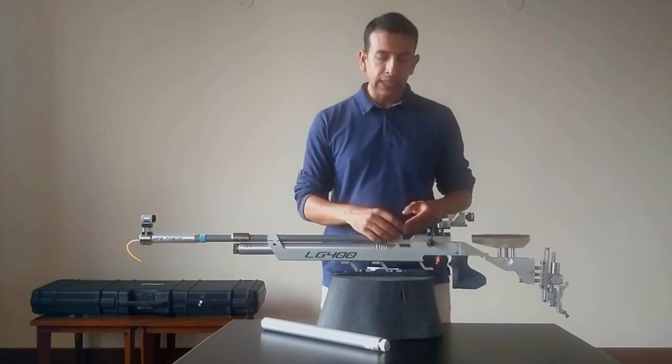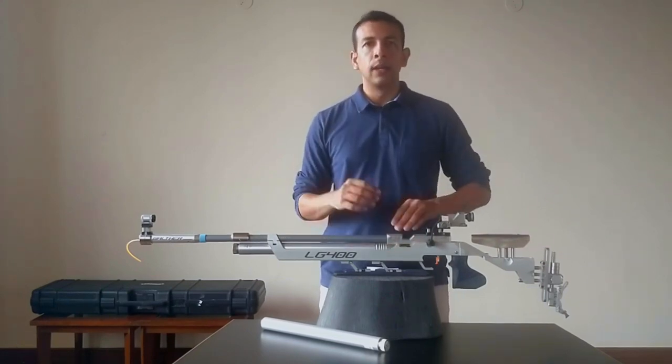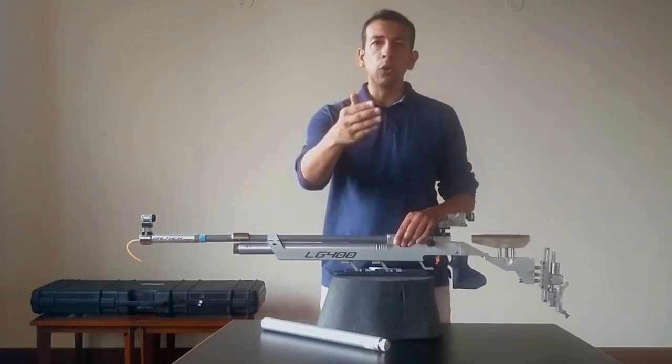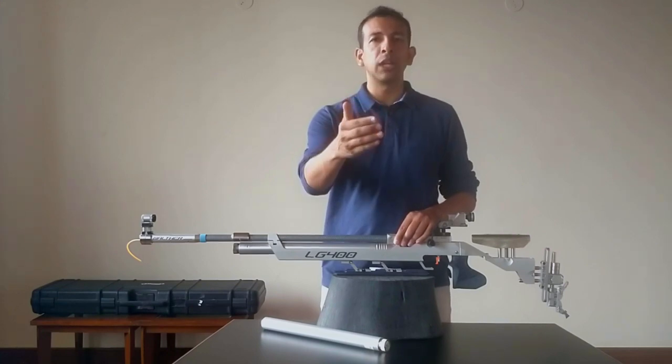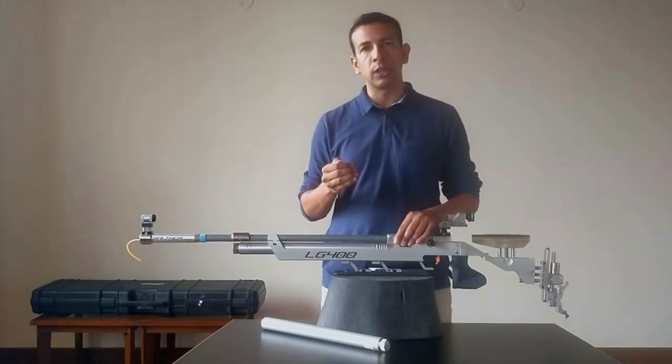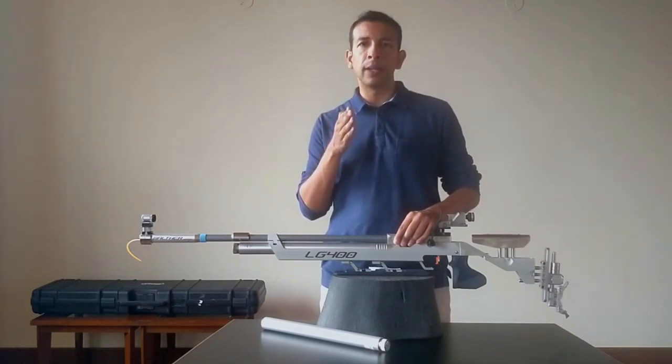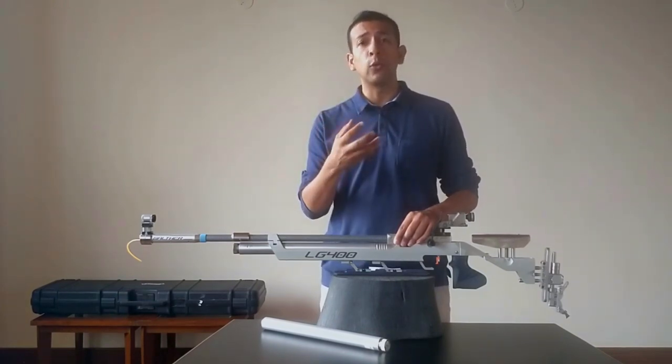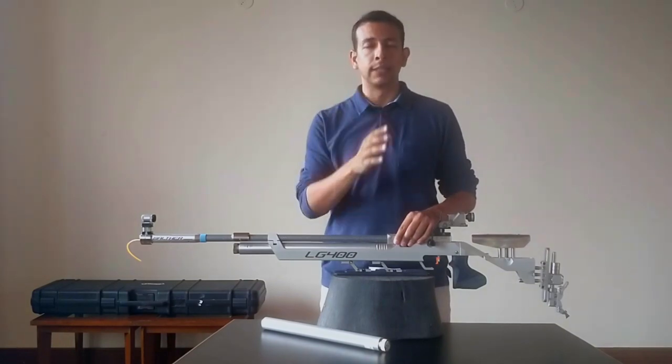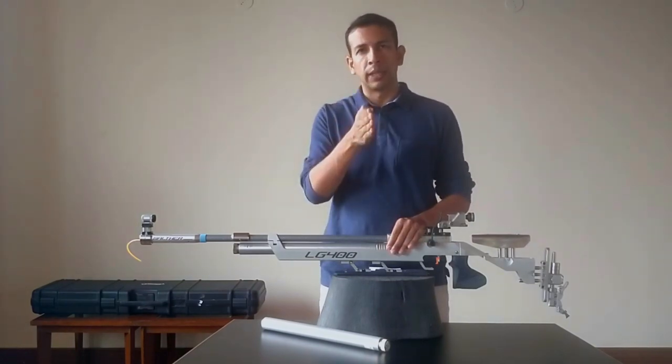What happens is when there is different amounts of air, then there is a lot more force in pushing out the pellet or less force in pushing out the pellet. When there is less force in pushing out the pellet, the pellet will drop. And when there is a lot more force in pushing out the pellet, the pellet will rise. Then you will have a vertical group like that.